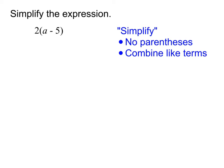So let's go ahead and do that for this first one. The distributive property means that we will distribute whatever is out front of the parentheses by multiplying it by every single term inside the parentheses. Terms are separated by addition and subtraction, so those are our two terms inside the parentheses. I'm going to first multiply the two by the a, so two times a is 2a.